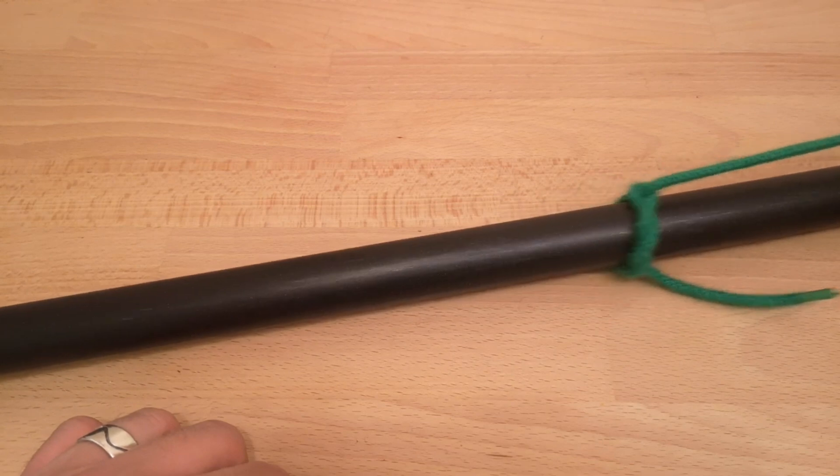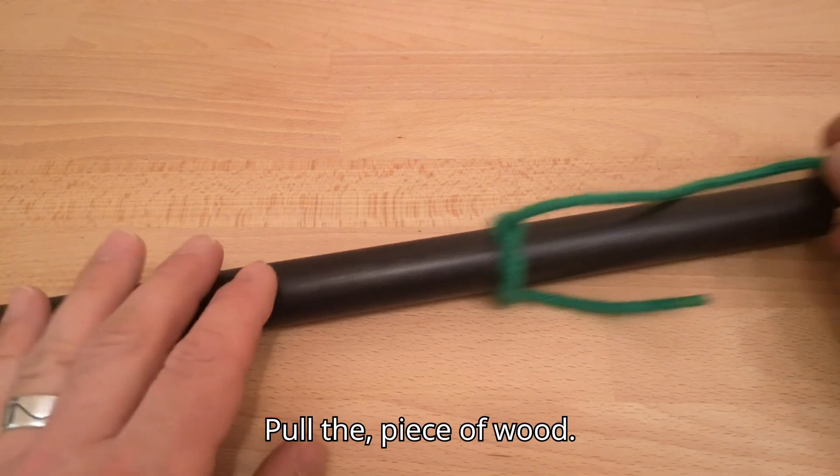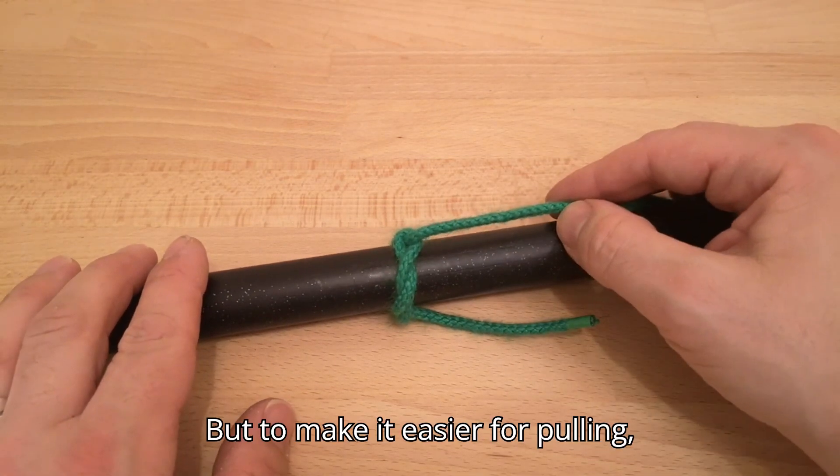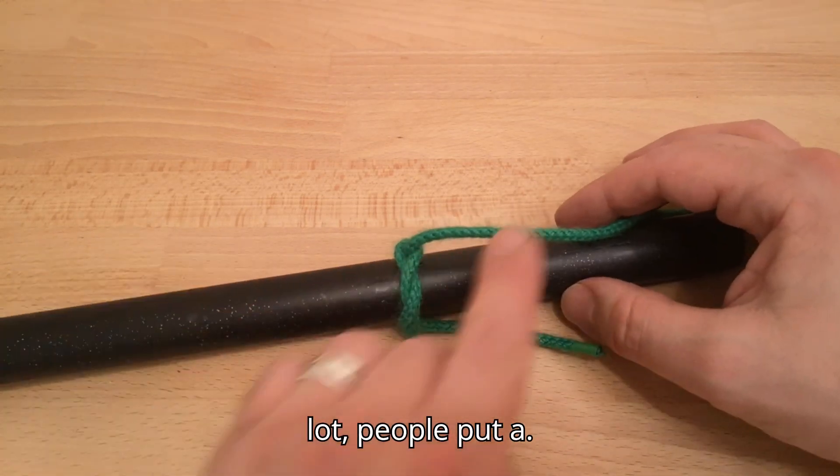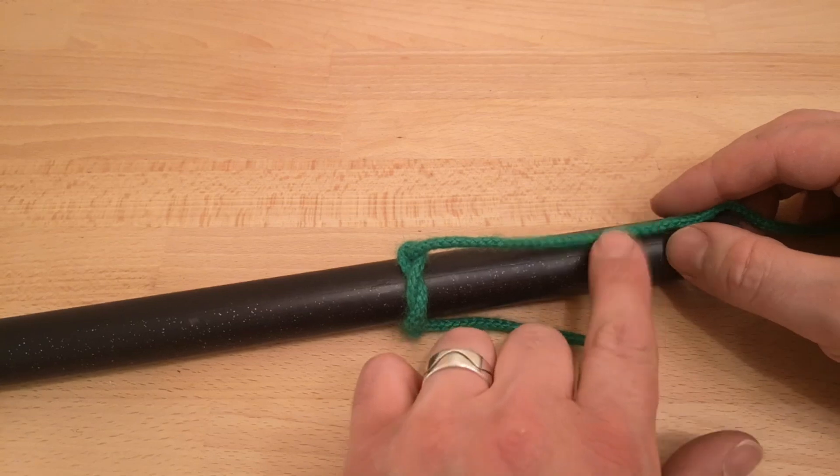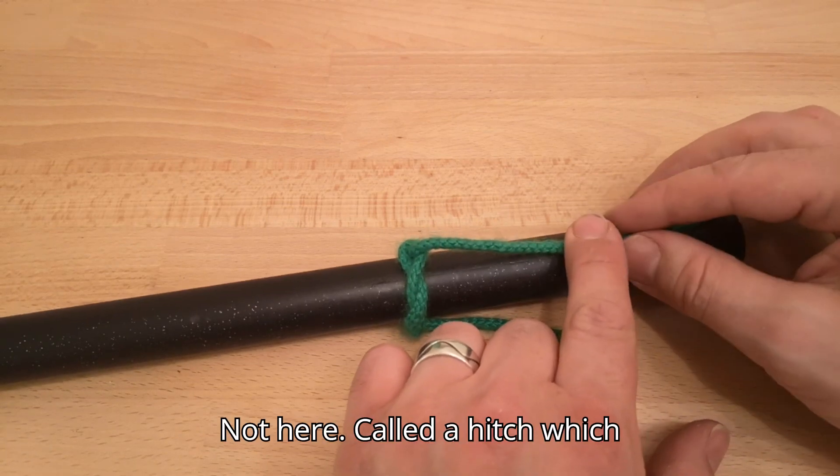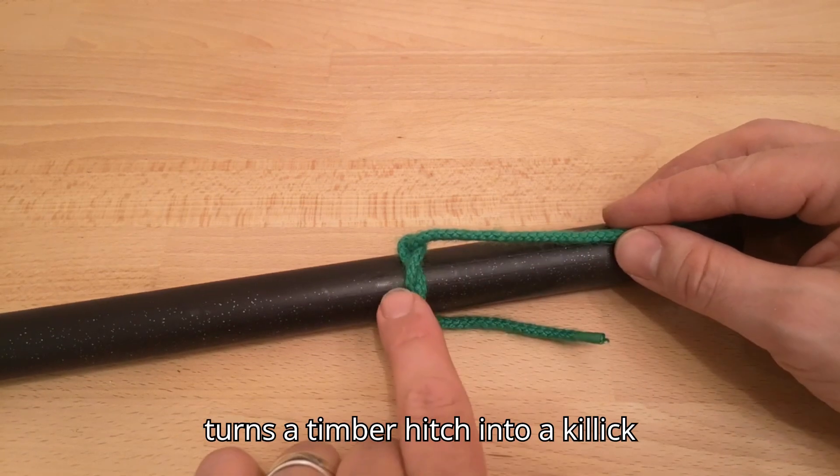Okay, then you see I can pull the pole or the piece of wood. But to make it a bit easier for pulling, because obviously it can move around a lot, people put another knot here called a hitch, which turns the timber hitch into a killick hitch.